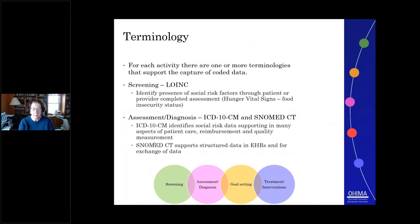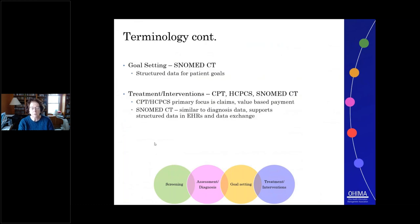Screeners can also be comprehensive, such as the Health Leads screening tool, which in addition to food insecurity addresses a number of other domains including transportation insecurity, housing instability, or social isolation. When we want to identify a specific social risk condition, we turn to either ICD-10 or SNOMED-CT, depending on the purpose of why that data is being collected. For goal setting, we want to structure data for patient goals using SNOMED-CT. For interventions, CPT and HCPCS would be used primarily on the claim side or for value-based payment, and SNOMED-CT would capture this information in electronic health records and for various types of data exchanges.